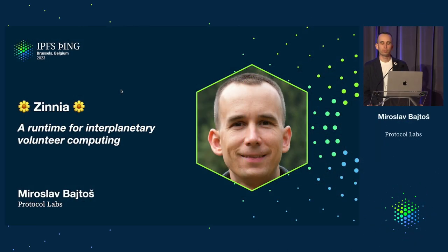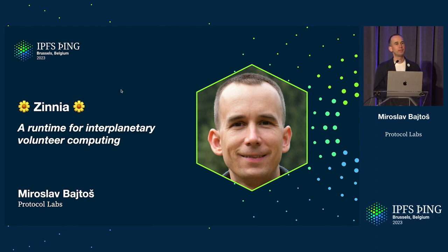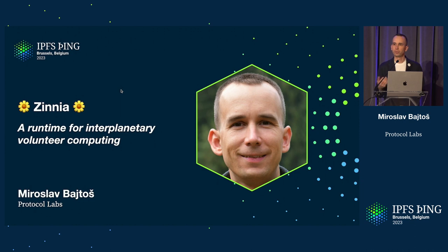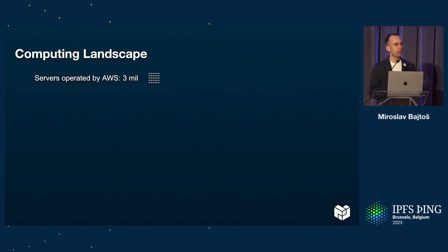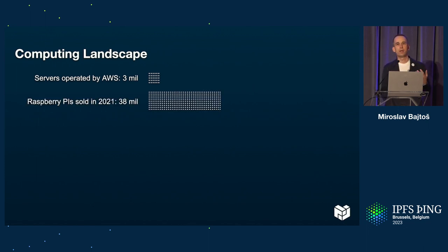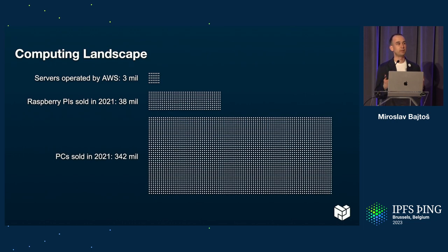I came here today to present a runtime that we are building to enable volunteer computing in the Web3 space. If you think about the computing landscape nowadays, we have some servers running in data centers, let's say in AWS, which could be like 3 million machines — but if you compare it to the number of Raspberry Pis sold in a single year alone, it's like one tenth, and that's still very few machines compared to how many personal computers are sold in a single year.